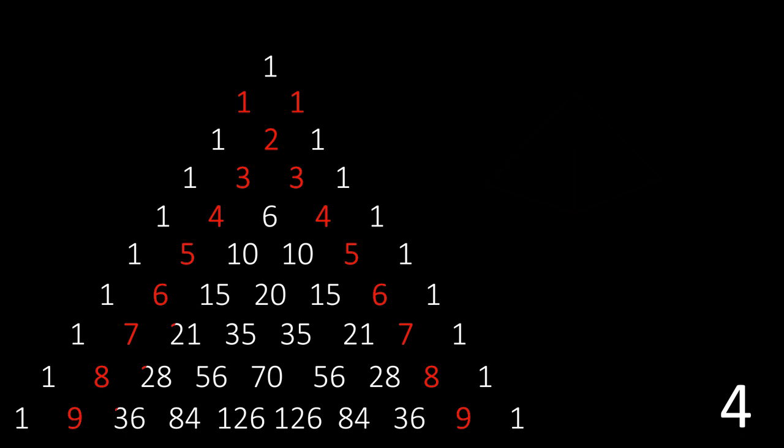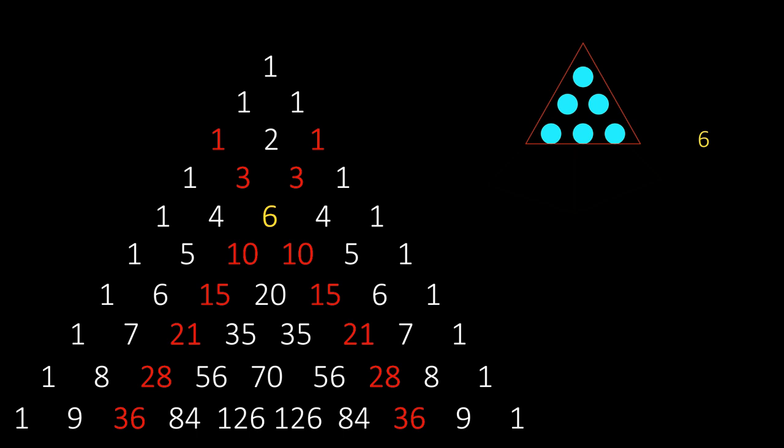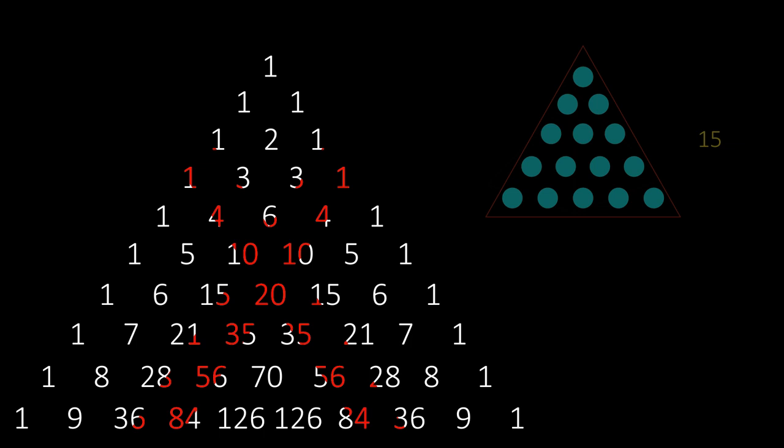Look at the diagonals. The first two aren't very interesting—all ones and the positive integers. But the numbers in the next diagonal are called the triangle numbers. Because if you take that many dots, you can stack them into an equilateral triangle.